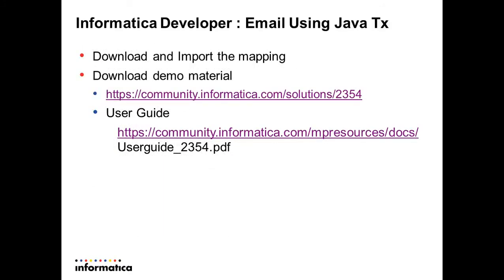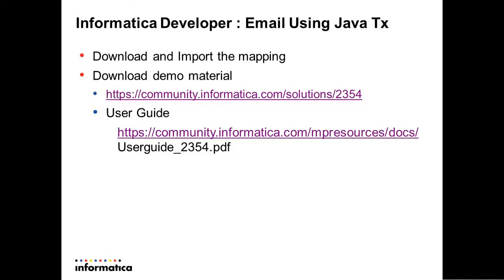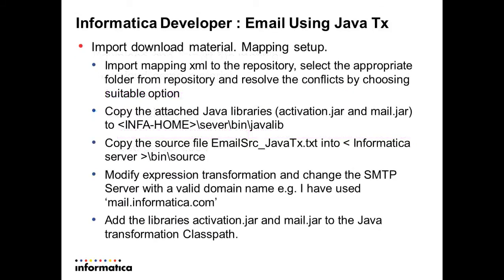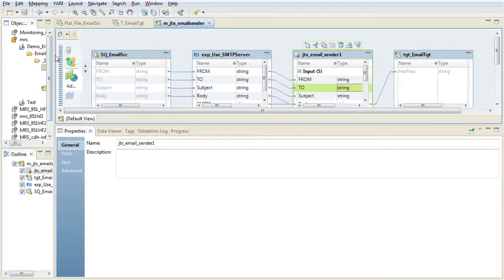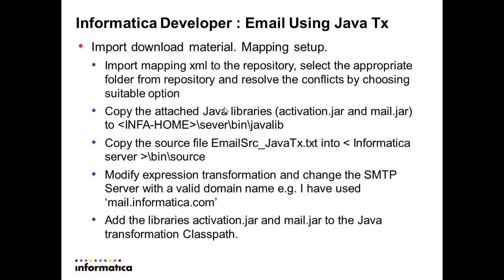You can download and import the mapping from the Informatica Community website, as seen here. I have already downloaded the demo material. You need to import the mapping, and then follow these steps: import the mapping to the repository, copy the attached Java libraries, copy the source file into the server machine, modify the expression and give the correct SMTP server name, and add activation.jar and email.jar to the Java transformation classpath.